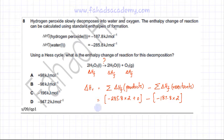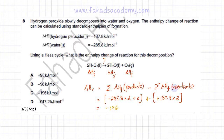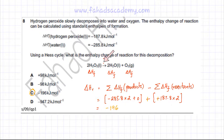The two minus signs in the subtraction step combine to give a plus sign for the reactant term. Calculating on the calculator gives an answer of −196 kJ/mol. So option C is the correct answer. Using the formula — sum of enthalpy of formation of products minus sum of enthalpy of formation of reactants — we determined the enthalpy change for this decomposition reaction.